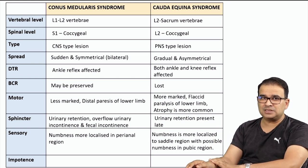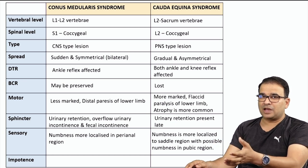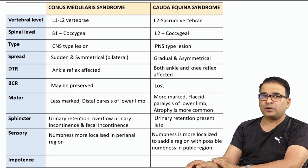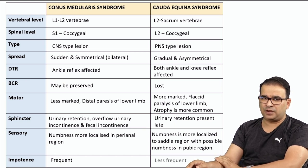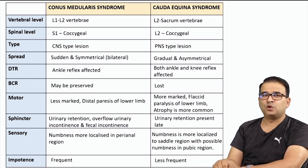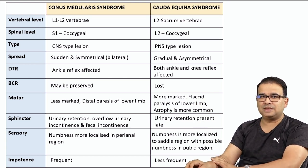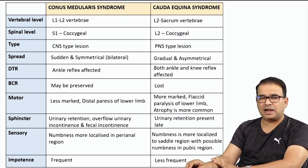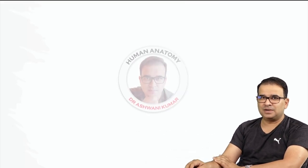Finally, regarding impotence: in conus medullaris syndrome, because of involvement of the bulbospongiosus and ischiocavernosus muscles, impotence will be seen. This can also be seen in cauda equina syndrome if those particular nerves are involved, but it is less frequent compared to conus medullaris. These are the key differences between conus medullaris and cauda equina syndromes. I hope you are able to understand and correlate them with the anatomical part — please leave your comments and doubts.